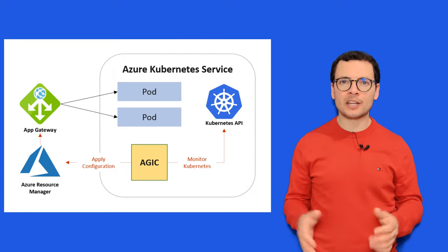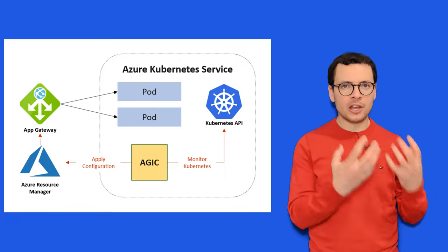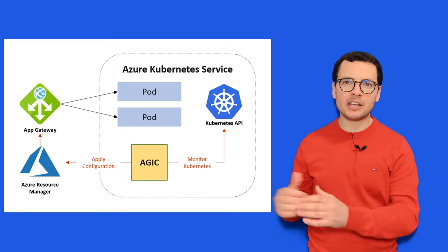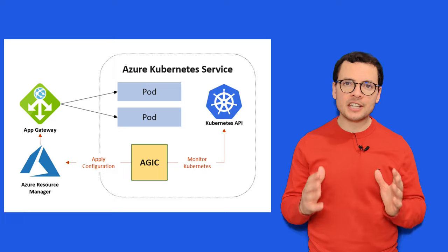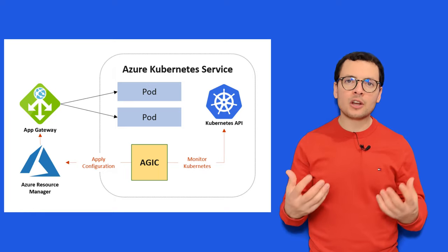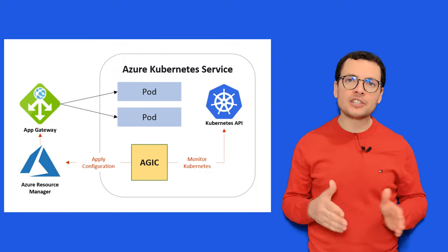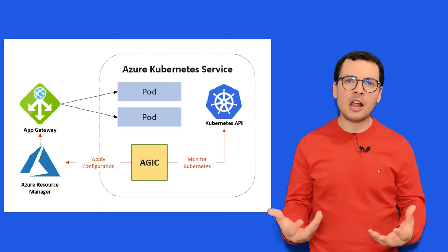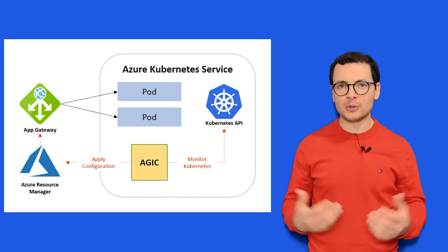In AKS Azure Kubernetes Service, we can choose any ingress controller to expose services either through the internet through a public endpoint, or through a private endpoint for the internal network. We can choose open source ingress controllers like NGINX ingress controller, but we can also leverage an ingress controller implemented through the Azure Application Gateway — the AGIC Azure Application Gateway ingress controller. Let's see how this works and how we can enable the AGIC extension into an AKS cluster to expose our services for end users.